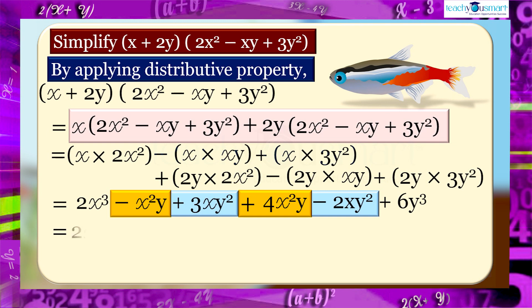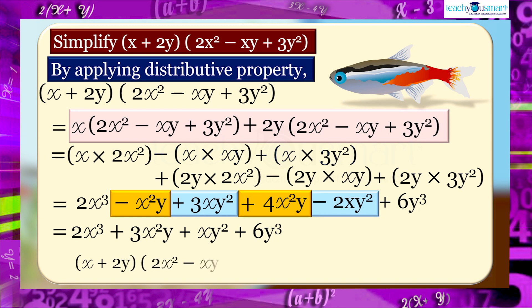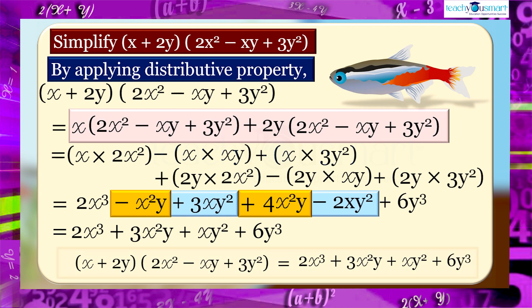Adding like terms, we get 2x³ + 3x²y + xy² + 6y³. Therefore, (x + 2y) multiplied by (2x² - xy + 3y²) equals 2x³ + 3x²y + xy² + 6y³.